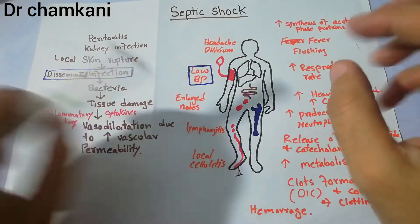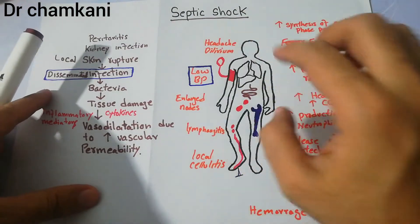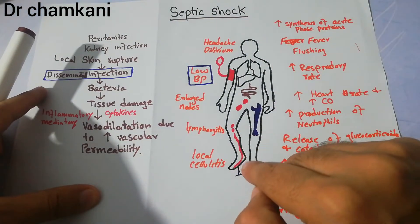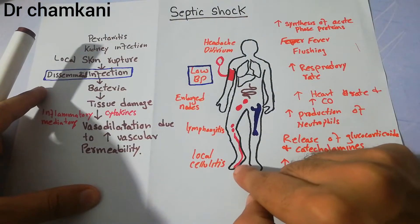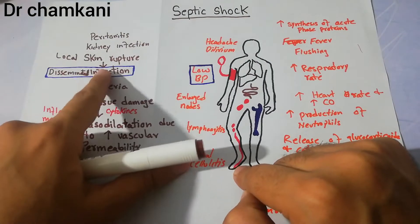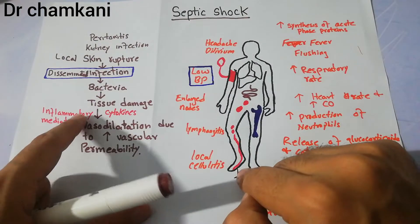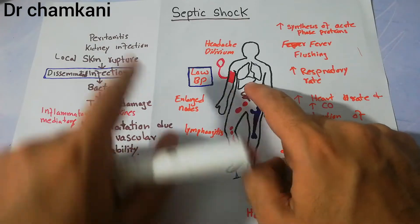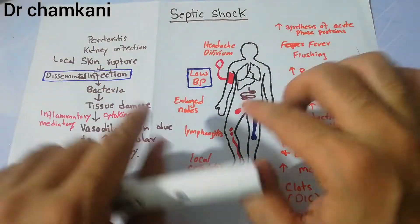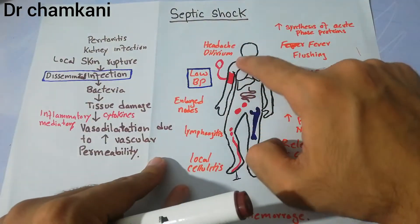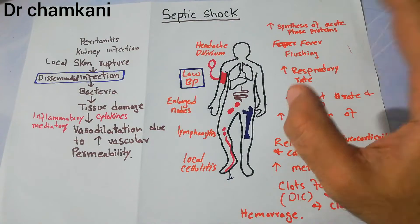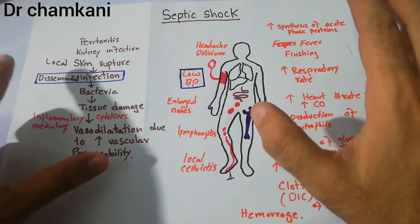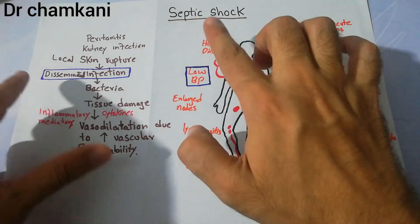The key problem in septic shock is that infection starts in one area — whether from a local skin rupture, peritonitis, kidney infection, or anywhere in the body — but it will spread through the blood and involve multiple systems. That is the main importance of septic shock.